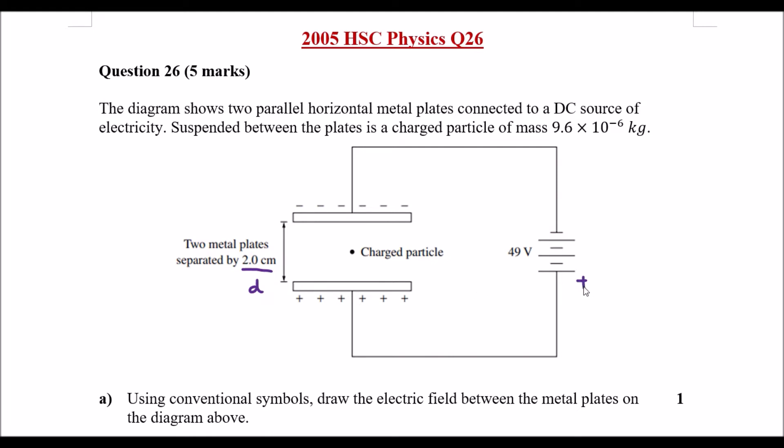So what that tells us is also the direction of the current, conventional current, is going this way across the circuit.